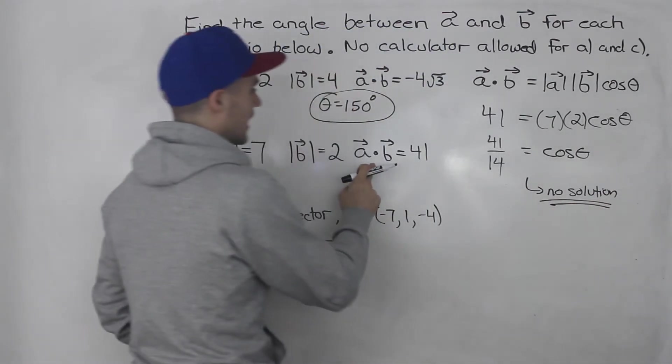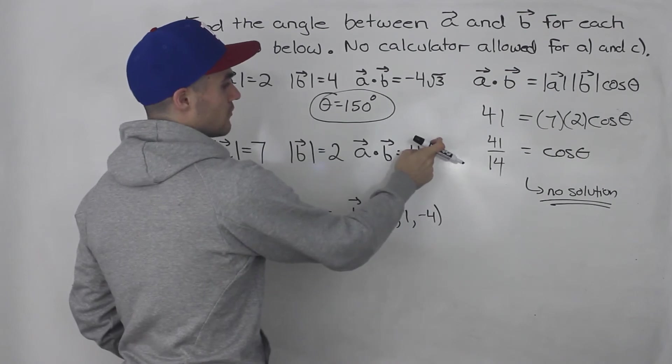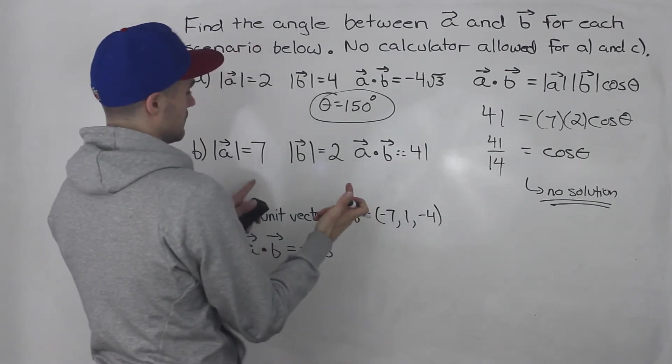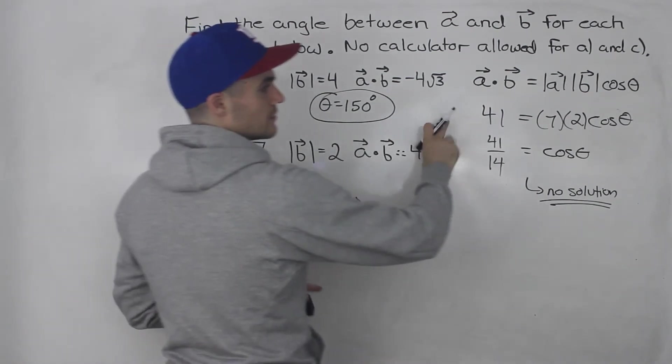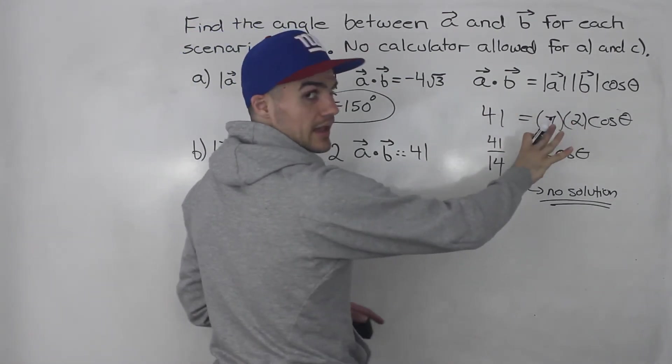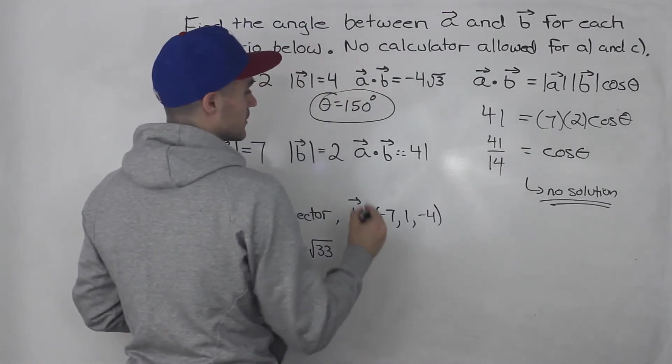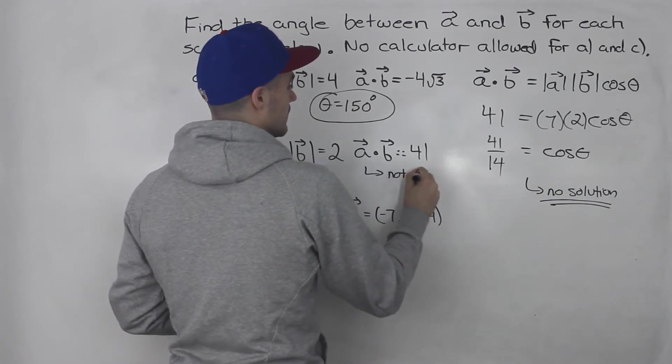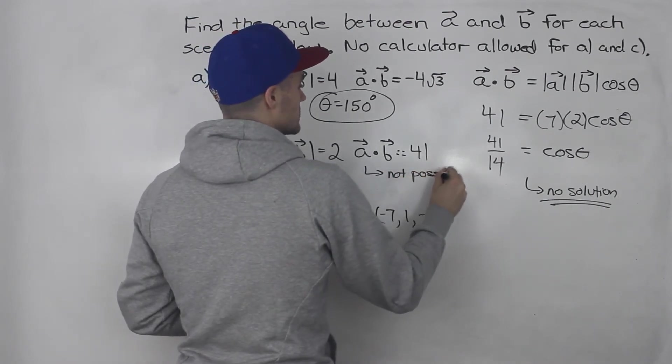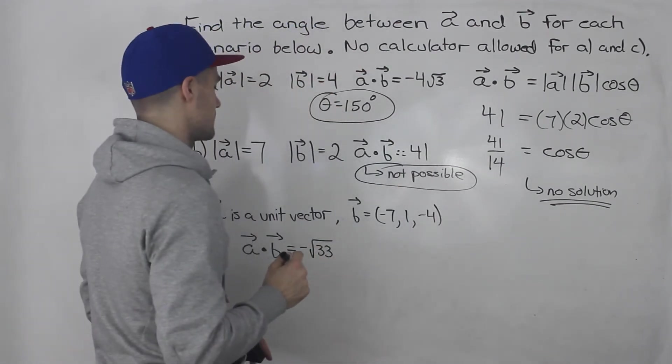So this actually can't happen. You can't have a dot product of 41 where the magnitudes of the two vectors are 7 and 2. And we prove that because this formula can't work, because this part can only be between negative one and positive one. So this part b here is not going to be possible. So we actually didn't need a calculator for part b either.